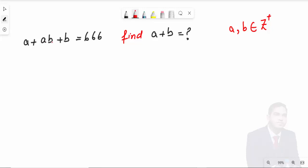Hello guys, welcome to technical math ebn channel. In this video we will show this question: a + ab + b = 666, find the value of a + b where a and b belong to Z (integers). So this is the question, so let's start.